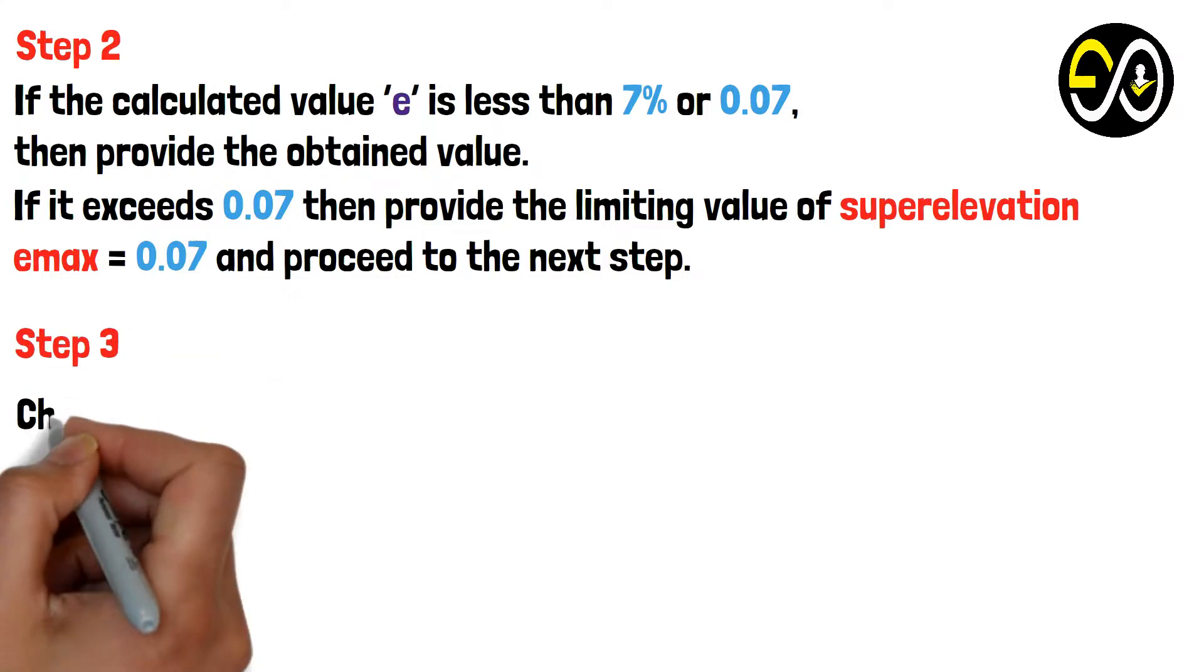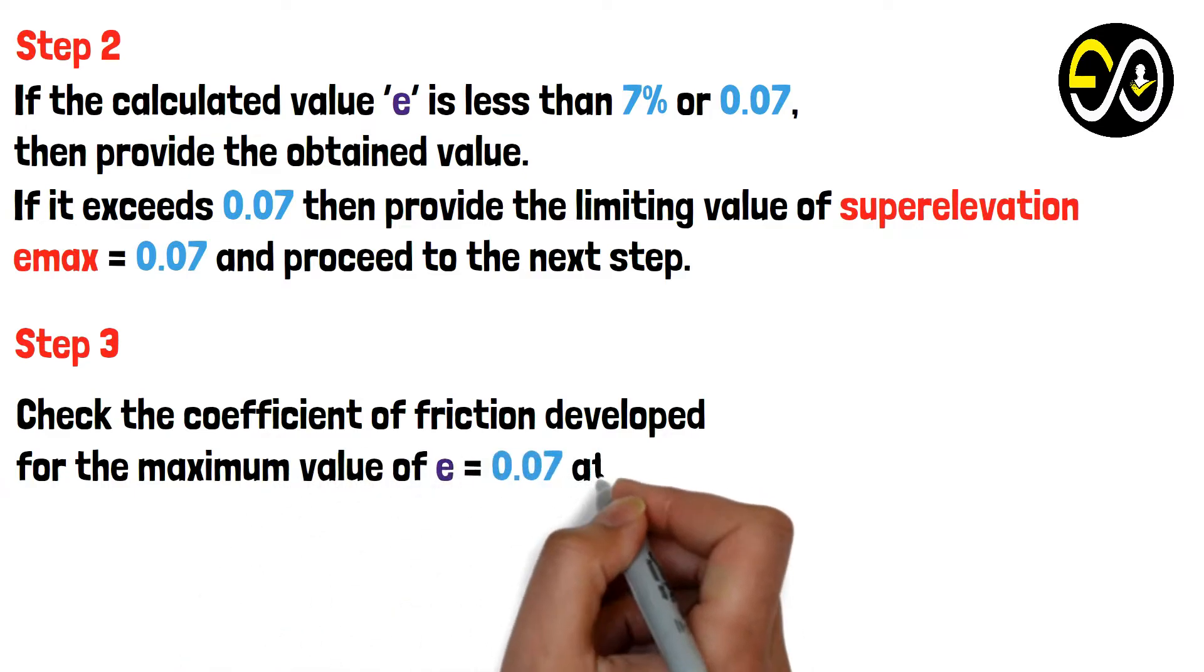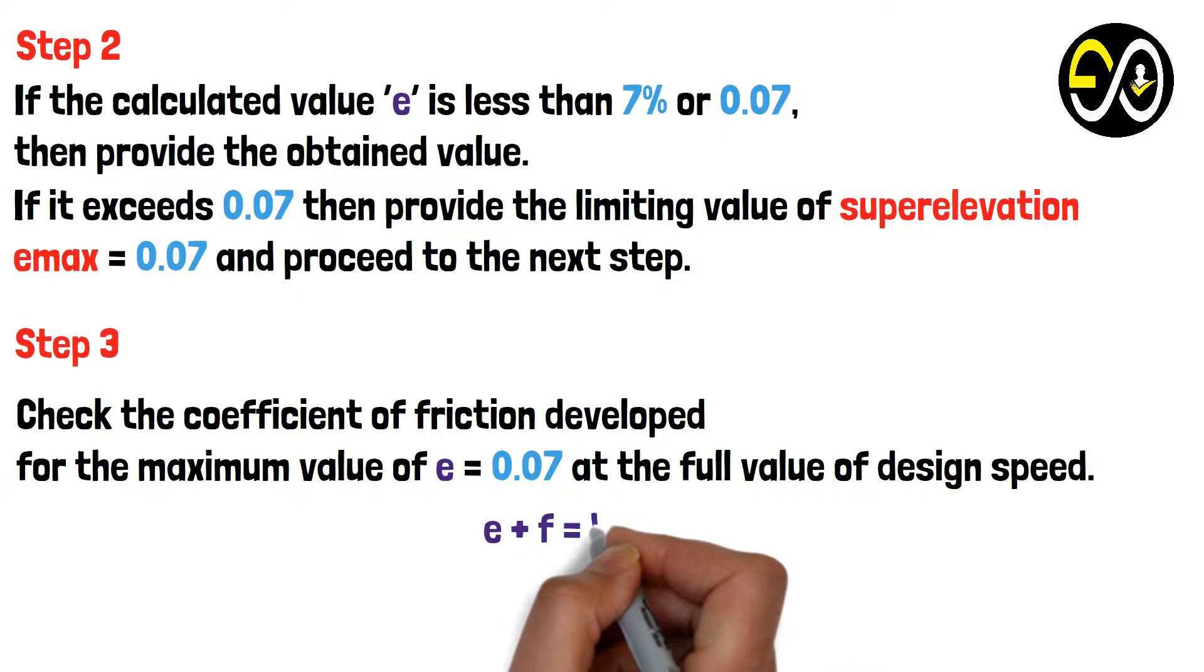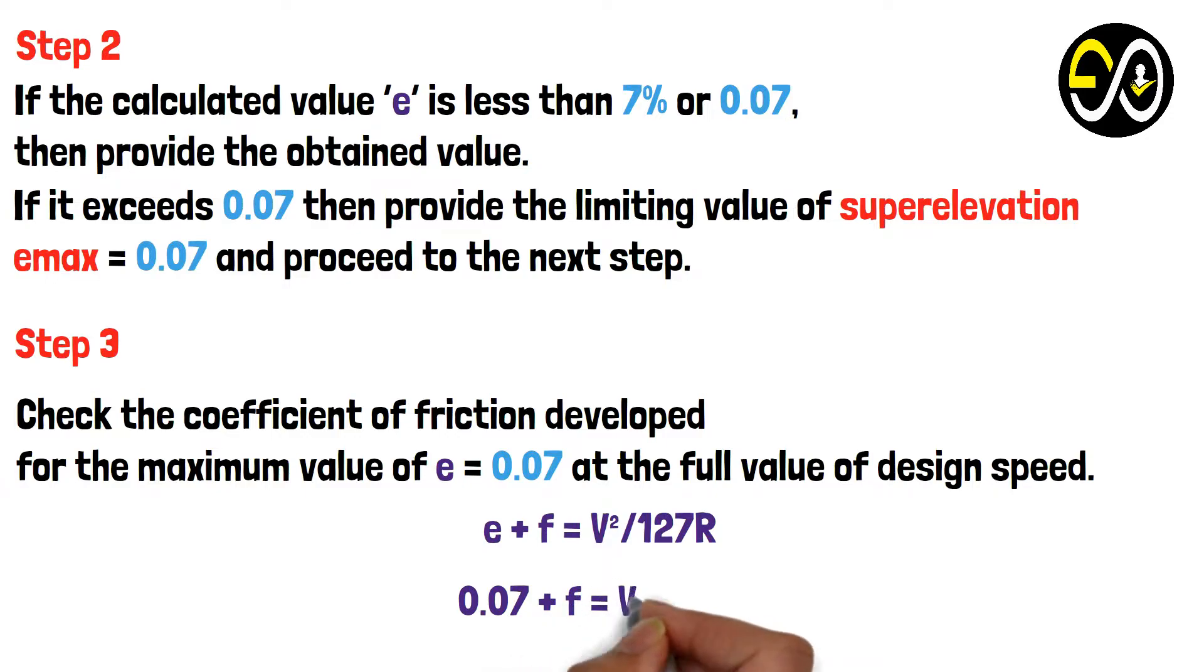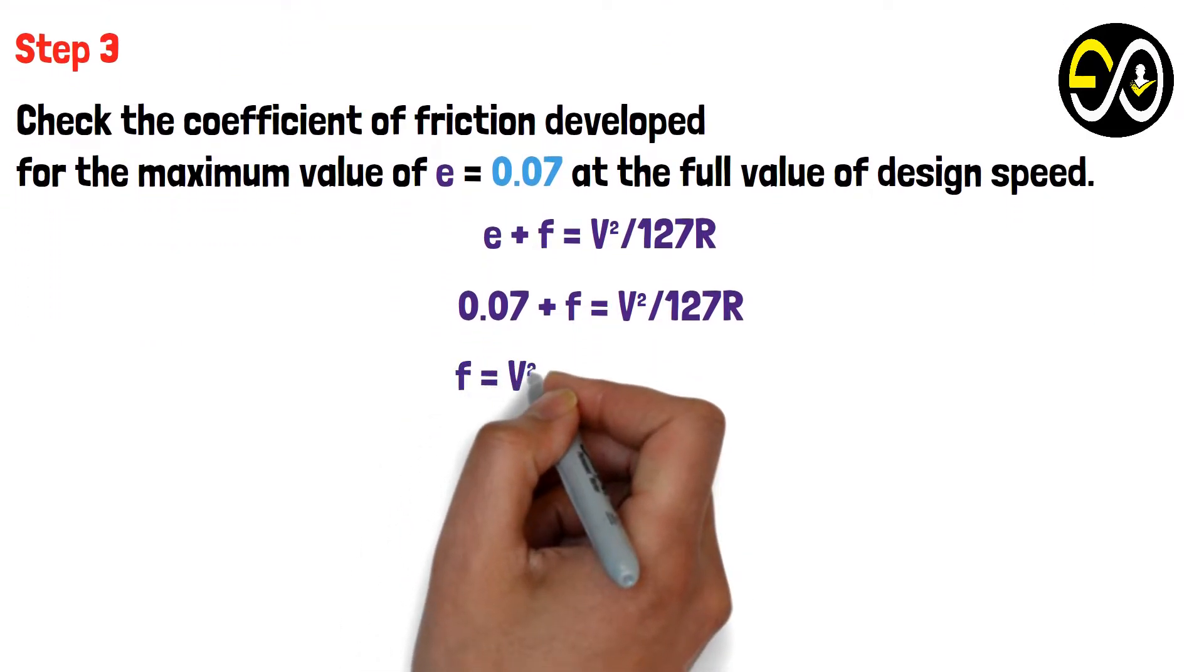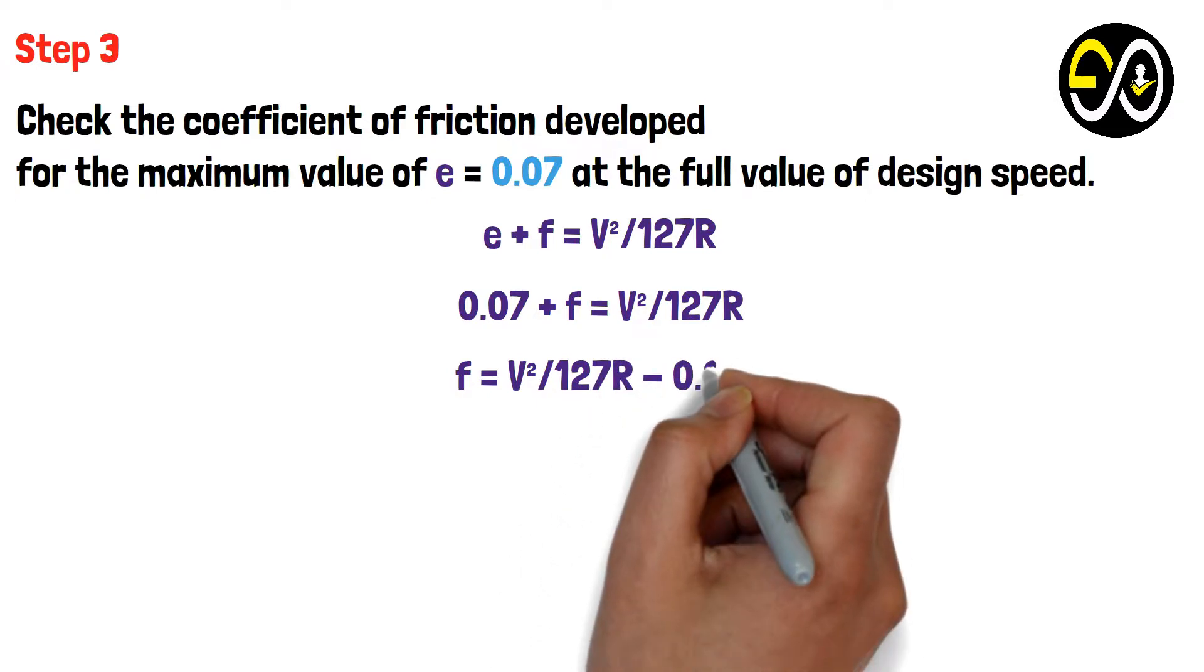Step 3: Check the coefficient of friction developed for the maximum value of e = 0.07 at the full value of design speed. e + f = V²/127R. 0.07 + f = V²/127R. Therefore f = V²/127R - 0.07.